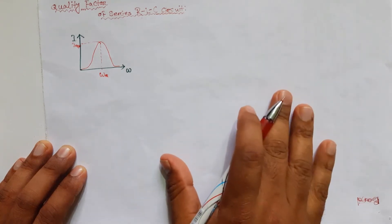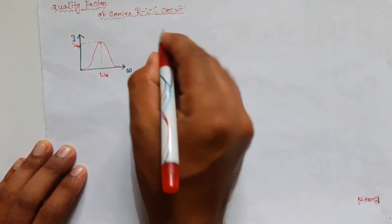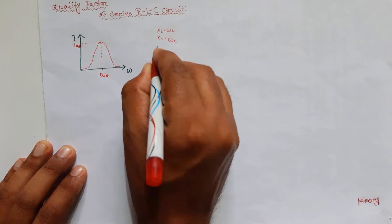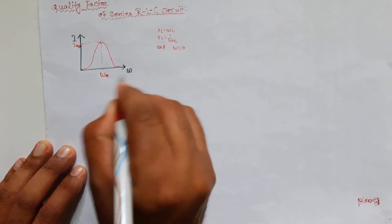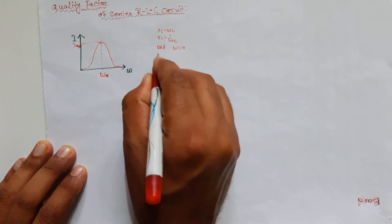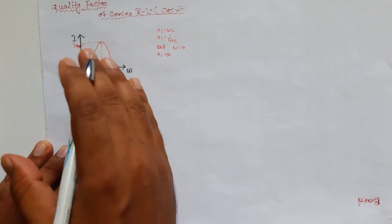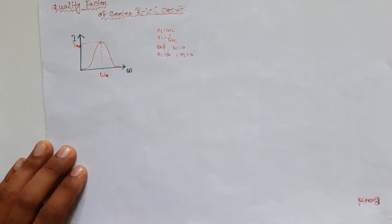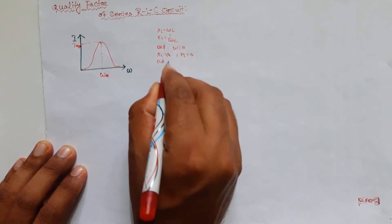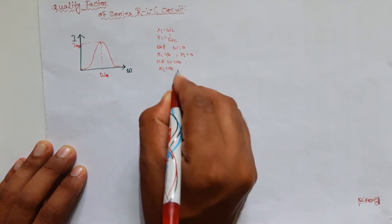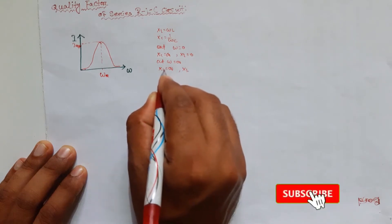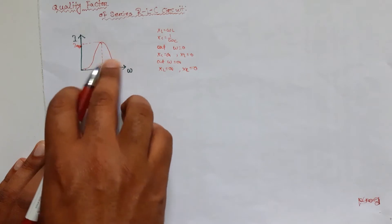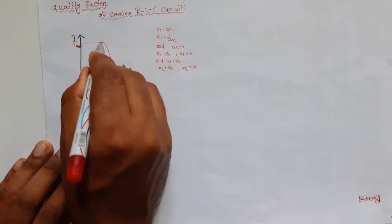At resonance, I-max means the maximum response occurs. The curve behaves like this because we know that XL equals omega·L and XC equals 1/(omega·C). At omega equal to zero, XC equals infinite — the capacitor behaves as an open circuit — so current will not flow and it will be zero. When you increase omega, at some point it will reach a maximum.